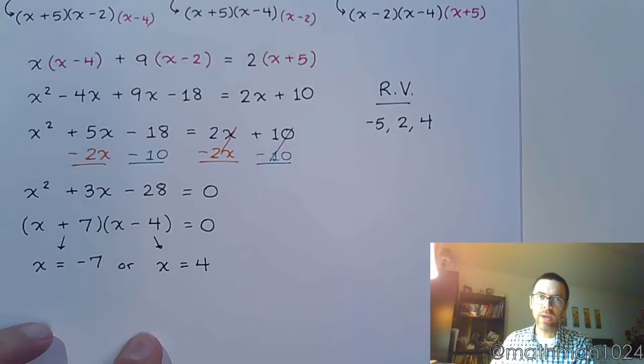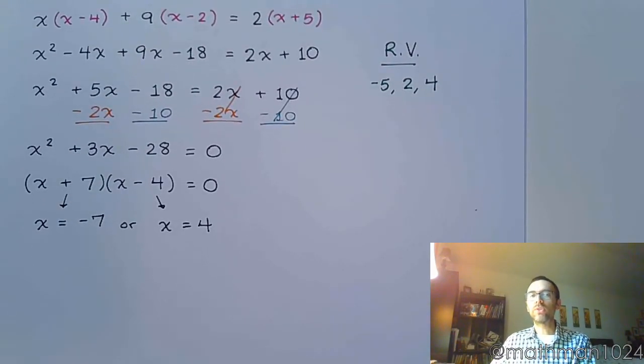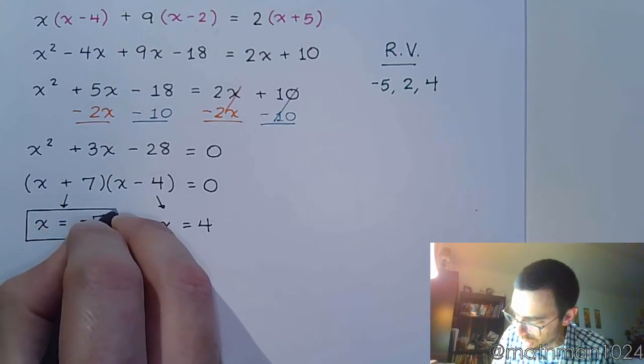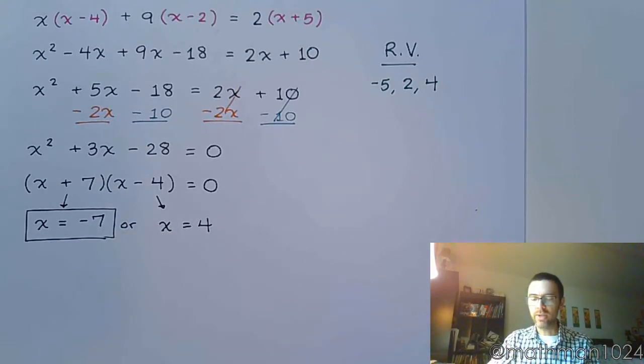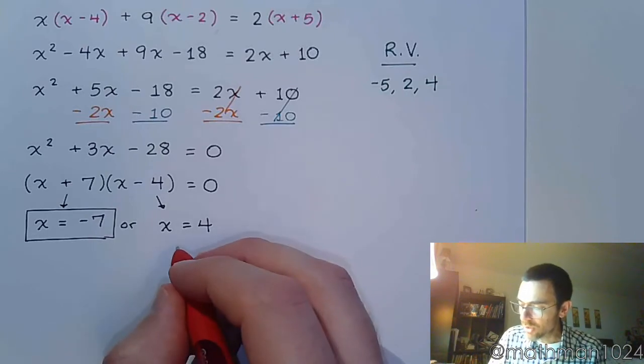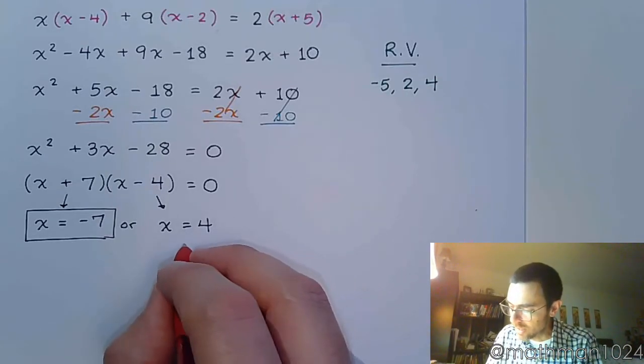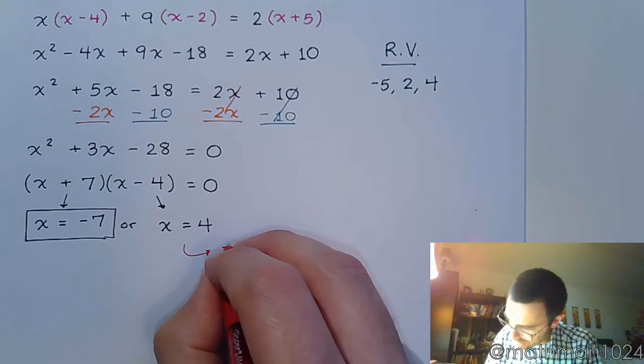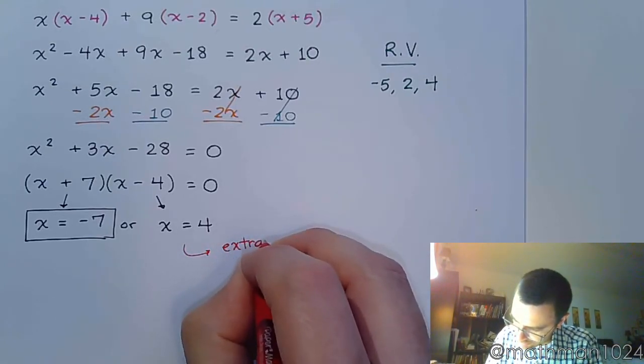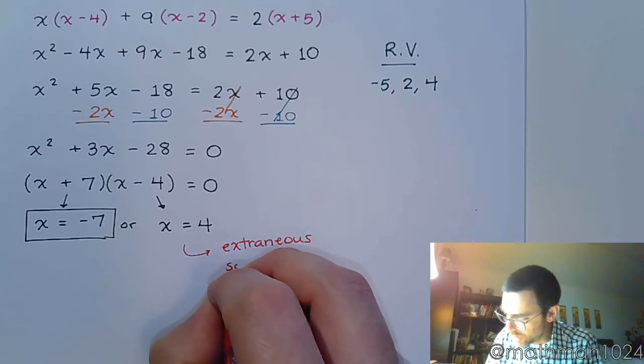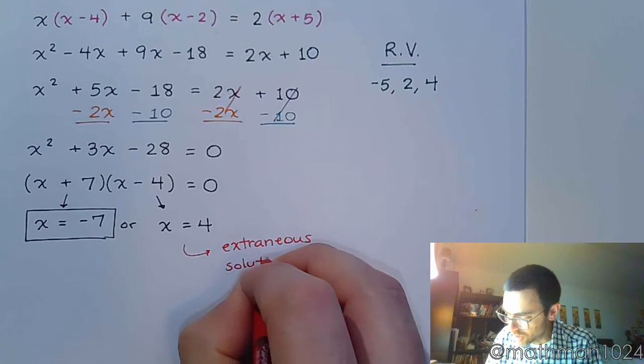So, we have to go back to the original equation and the original restrictions, which tells us that x equals negative 7 is totally fine. Totally fine. No problems. But it's x equals 4 that is the problem. So, you don't box this guy. You don't include him in the solution set. Instead, he has a special name. This is what we call an extraneous solution.